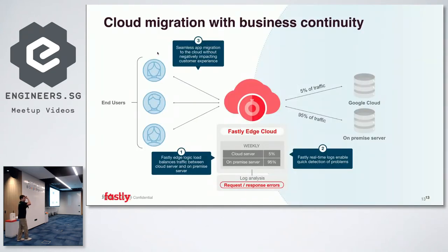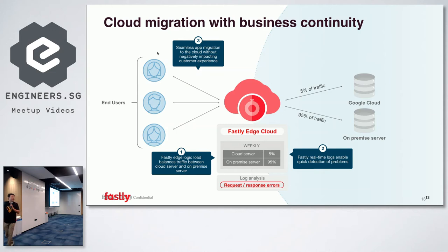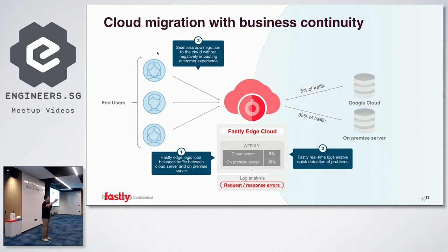Here's a use case we've implemented: customers with an on-prem environment wanting to move to GCP. Similar to the edge load balancer concept, you can use the Fastly edge network to slowly transition traffic to a GCP environment without any problems at all.